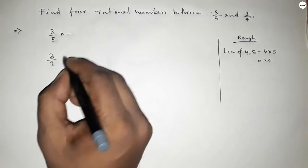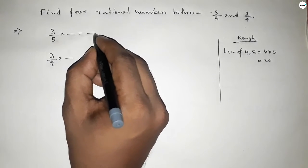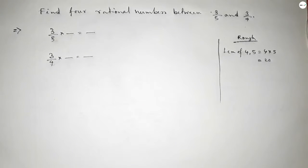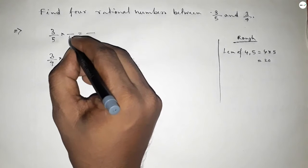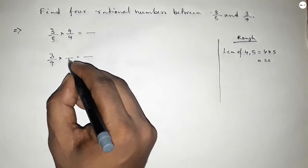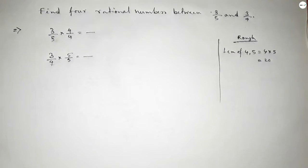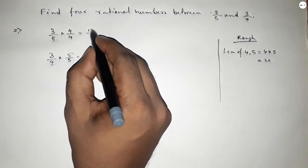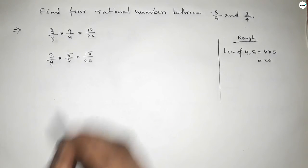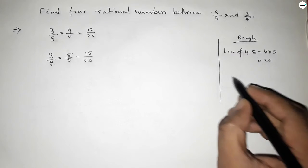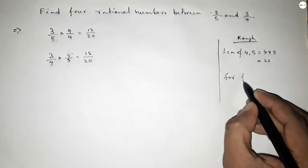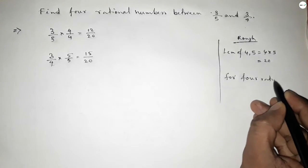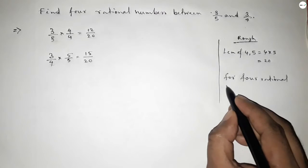Now what should be multiplying here and here to get the denominator of both 20? If we put here up and down 4 and here 5, then we can get the denominator of both 20. So this is 12/20 and this is 15/20.